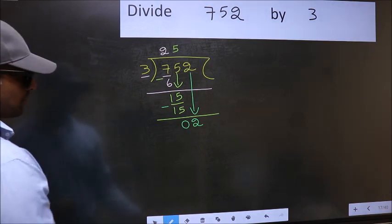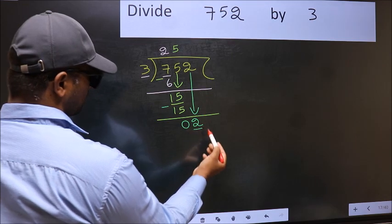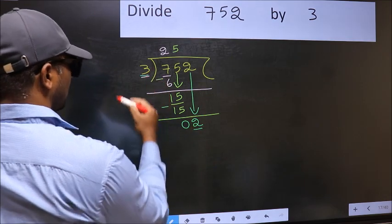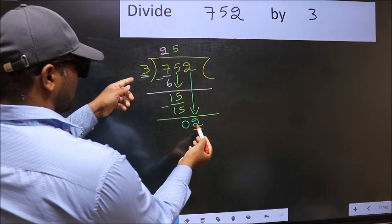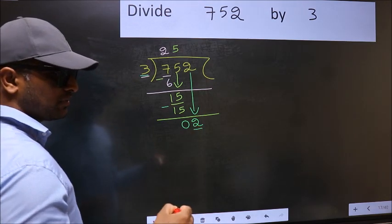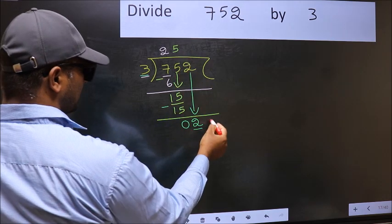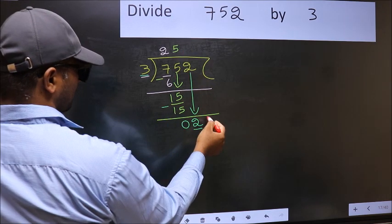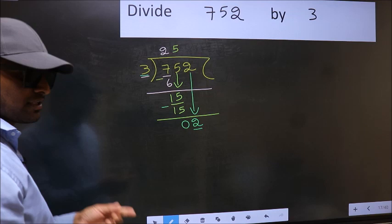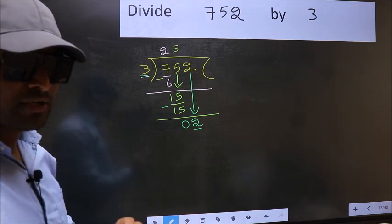See, here we have 2 and here 3. 2 is smaller than 3. So, what many do is, they directly put a dot and take 0 here. Which is wrong. Why is it wrong?